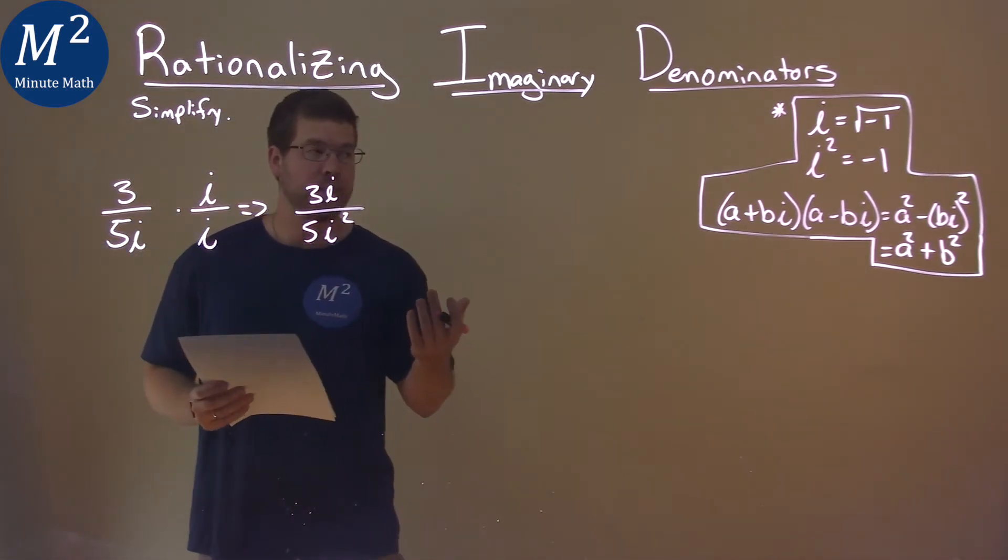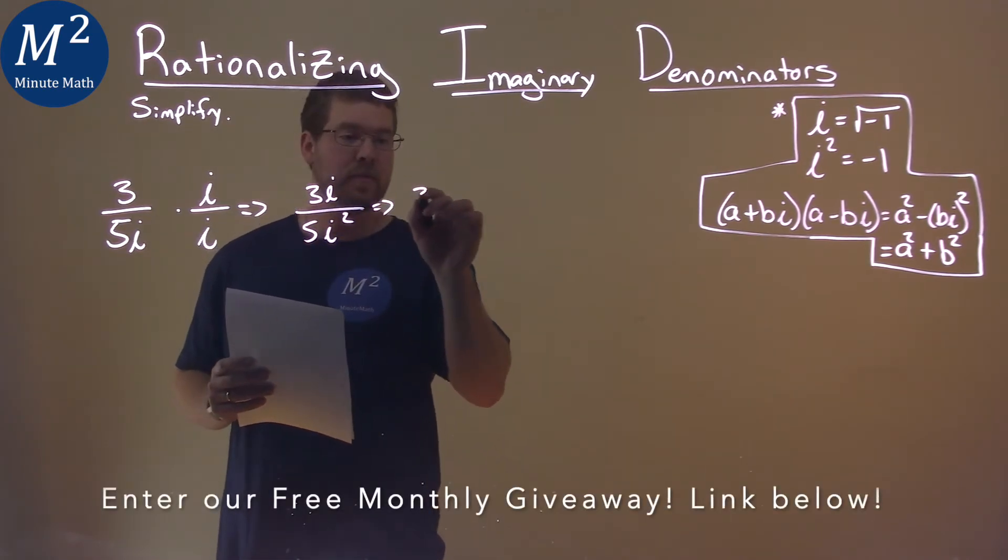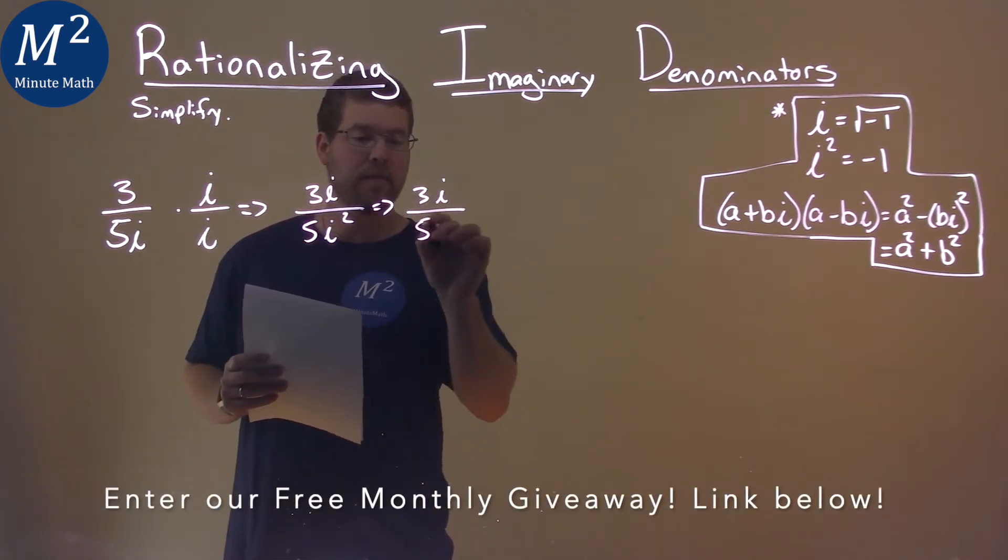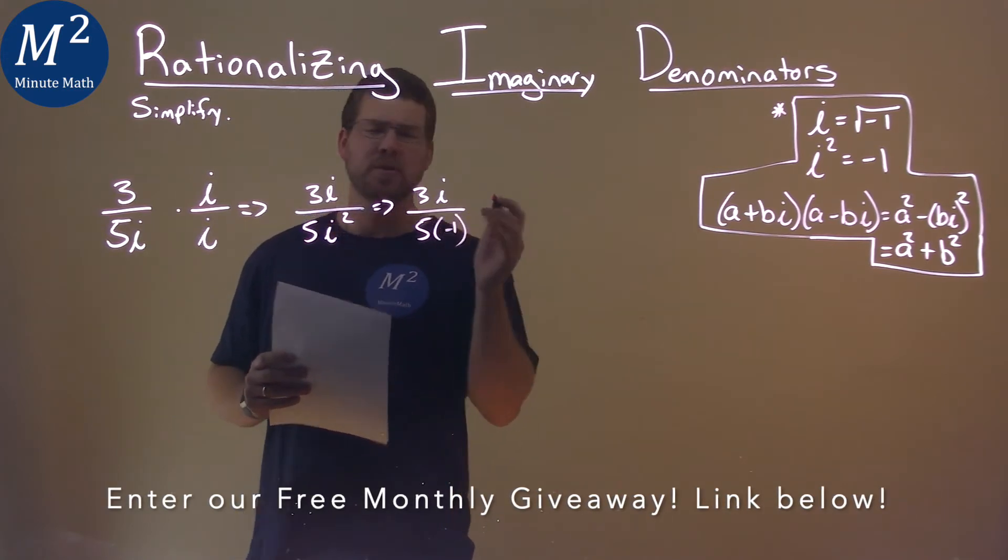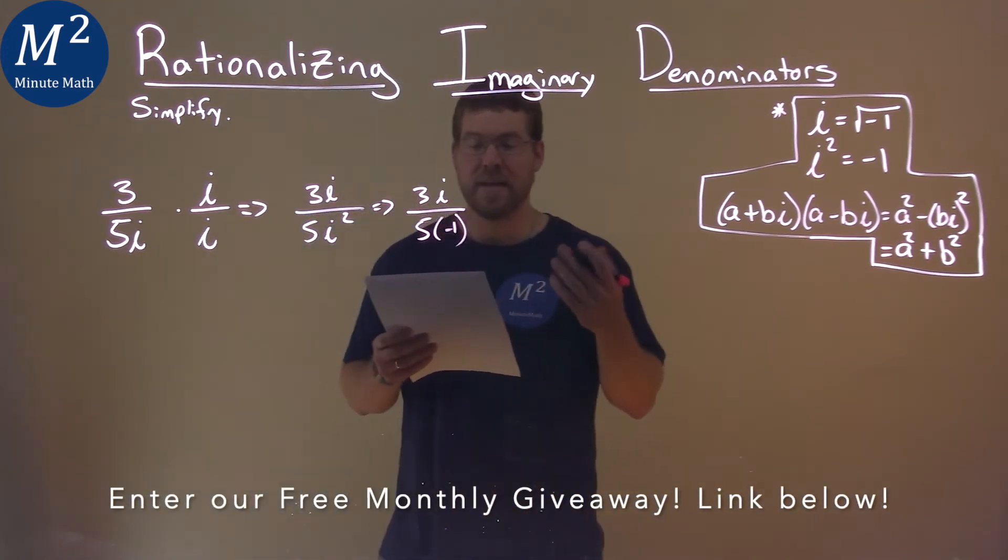What's i squared? i squared is negative 1. So we have 3i over 5 times negative 1, which—5 times negative 1 is negative 5.